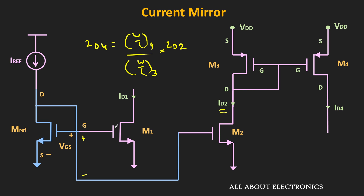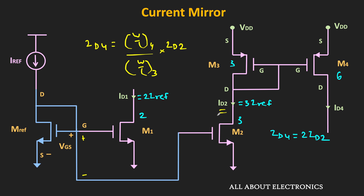Let's put some numbers to make this clearer. Say the W/L ratio of M1 is 2 times the reference transistor, while the W/L ratio of the second and third transistors is equal to 3 times the reference transistor, and for the fourth transistor the W/L ratio is 6 times the reference transistor. With that, ID1 equals 2 times I_reference, while ID2 and ID3 equal 3 times I_reference. ID4 equals 6 divided by 3 times ID2, meaning ID4 equals 2 times ID2. Since ID2 equals 3 times I_reference, ID4 equals 6 times I_reference. In this way, we can generate multiples or fractions of this reference current source, ensuring all MOSFETs operate in the saturation region.